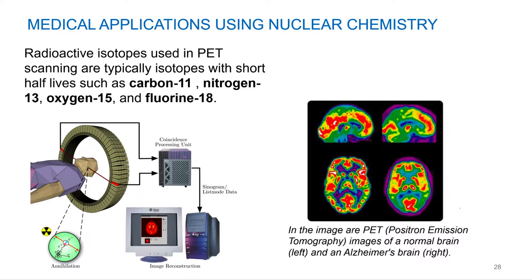A PET scan is a positron emission tomography. So it's a positron emitter — that's what you're going to use. You administer some type of molecule that has a positron emitter atom. It's called radiolabeling. So you synthesize a molecule with a radioactive isotope on it. There are lots of positron emitters that are useful for organic or biological chemistry.